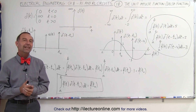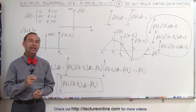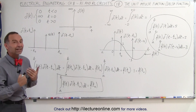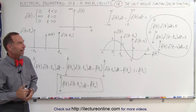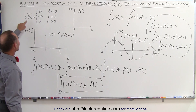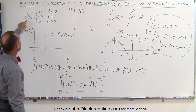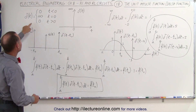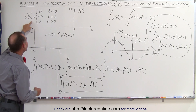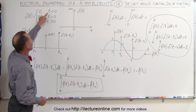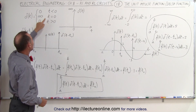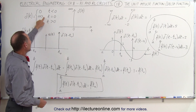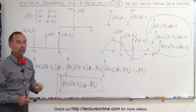Welcome to ElectronLine. Now let's take a closer look at the unit impulse function, also known as the delta function in mathematics. The definition of the delta function, or the unit impulse function, is that it's equal to zero for time less than zero, zero for time greater than zero, and infinity for time equal to zero.